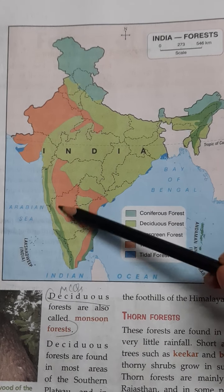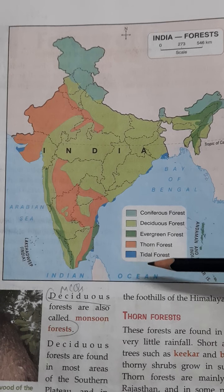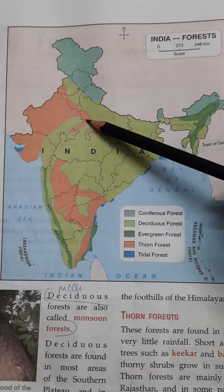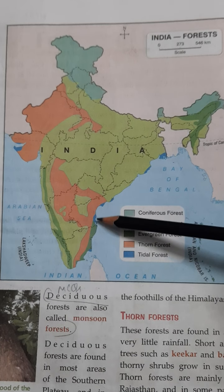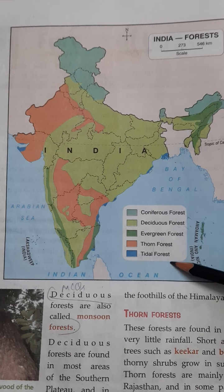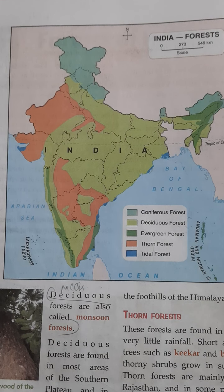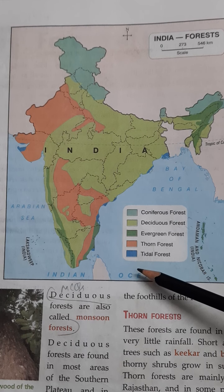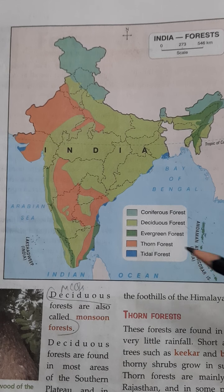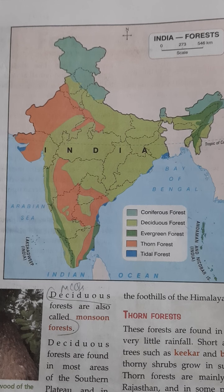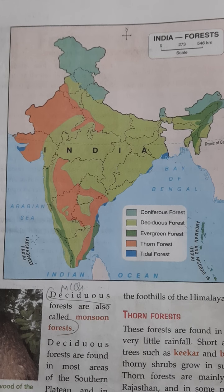Evergreen forests are formed in warm areas with plenty of rainfall. They are found in the Western Ghats and the northeastern states of India such as Assam, Arunachal Pradesh, Meghalaya, and Tripura, as well as a little in the Eastern Ghats.